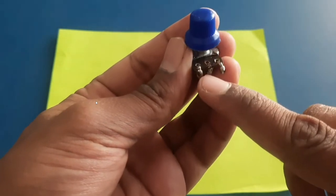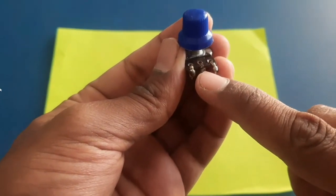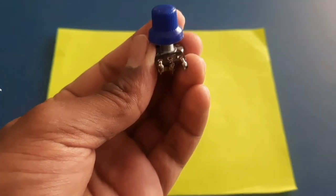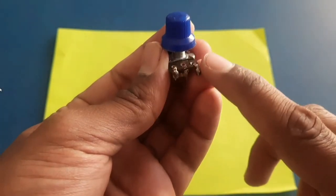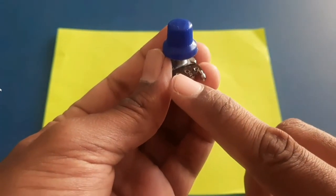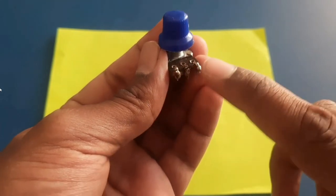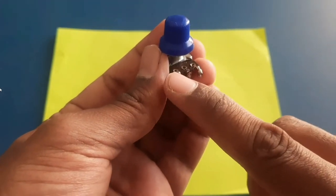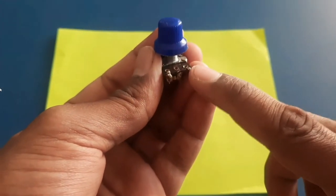The middle pin is for signal so you have to connect this pin to analog pin of Arduino. And rest of the pins you can connect either to 5 volt or to ground. And if you have connected this to 5 volt then you have to connect this to ground.